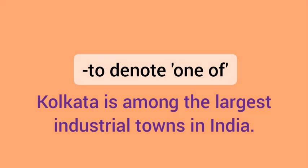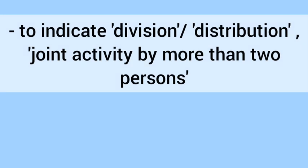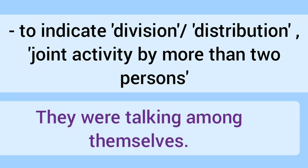Among is used to indicate division, distribution, or joint activity by more than two persons. जब दो से ज़्यादा लोग कोई joint activity कर रहे होते हैं या उनमें division या distribution की बात करते हैं — for example: 'They were talking among themselves.' — वो आपस में बातचीत कर रहे थे, यानि कि वो दो से ज़्यादा लोग थे।